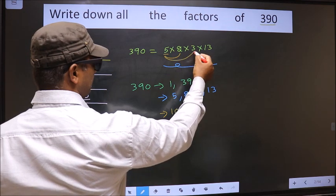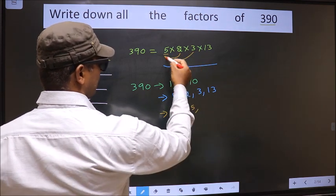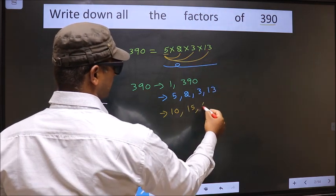Now I combine with 3. 5 into 3, 15. Now I combine with 13. 5 into 13, 65.